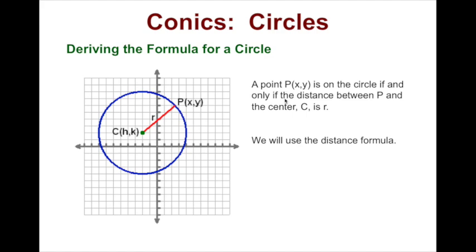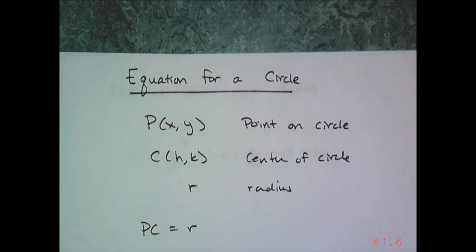We use this definition to find the equation of a circle. If I want to derive the formula, I get any point P(x,y), it's on the circle if and only if the distance between P and the center C is always r. We're going to use the distance formula to derive the formula of a circle.